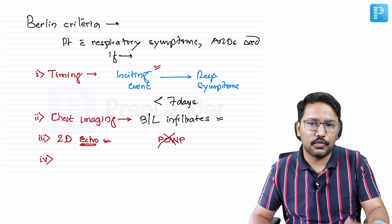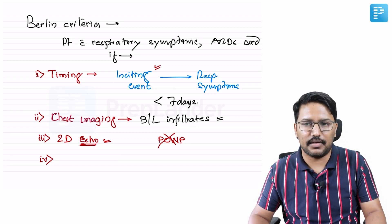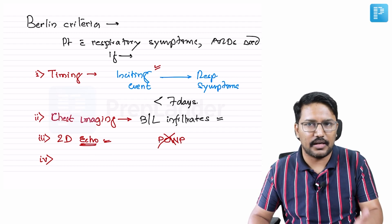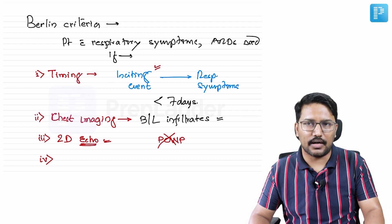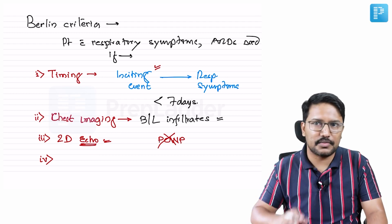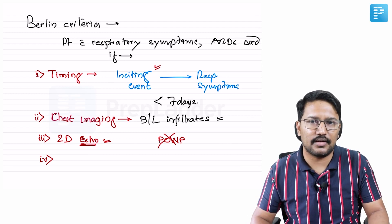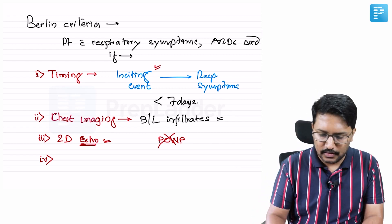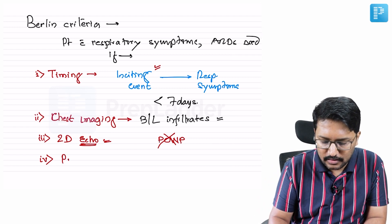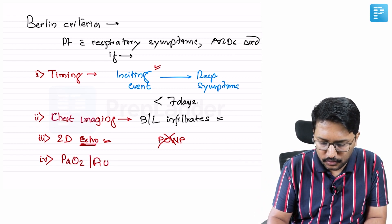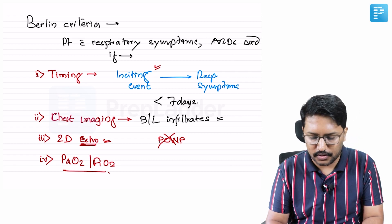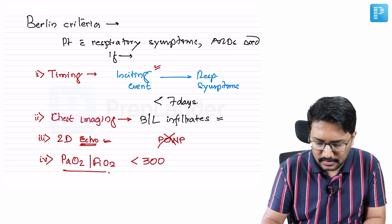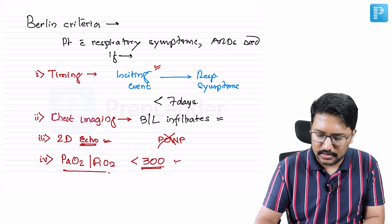Fourth criterion: we have to prove the patient has significant hypoxia to call it ARDS. If there is no significant hypoxia, it is not ARDS. We define this hypoxia by looking at the PaO2/FiO2 ratio. If the PaO2/FiO2 ratio is less than 300, it qualifies to be called ARDS.